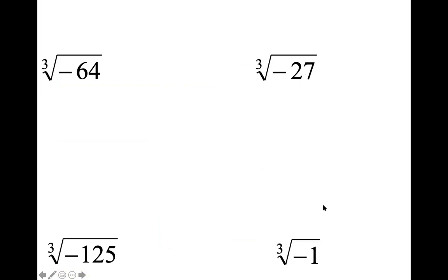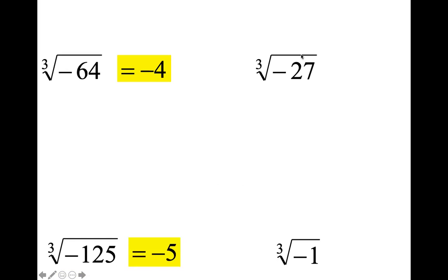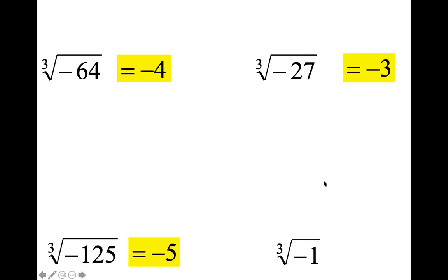The cube root of negative 64 is negative 4. What's the cube root of negative 125? Negative 5. Cube root of negative 27? Negative 3. And the cube root of negative 1 is negative 1. That's how you do it.